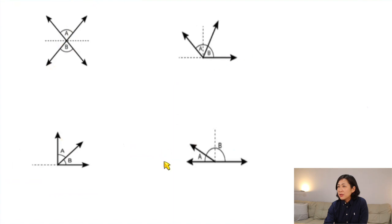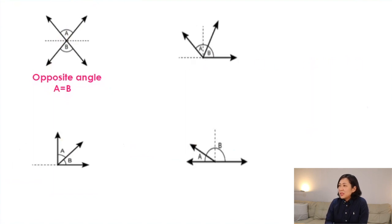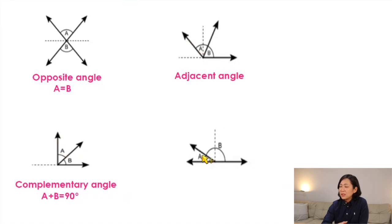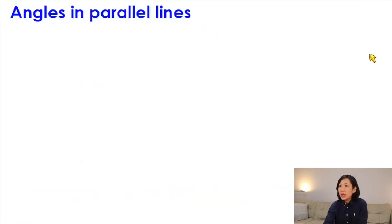Now we have a few more angles — pairs of angles. The first is opposite angles: two angles on opposite sides, and they always have the same size. Next is adjacent angles: two angles right next to each other. Then complementary angles are two angles that add up to 90 degrees. Finally, supplementary angles are any angles on a straight line — they always add up to 180 degrees.